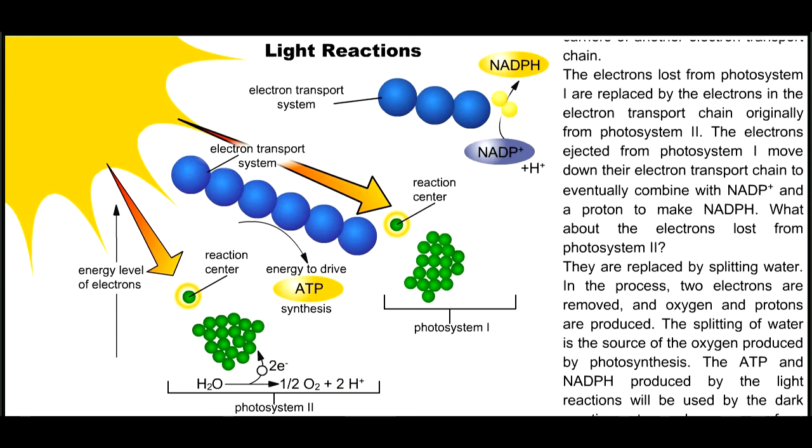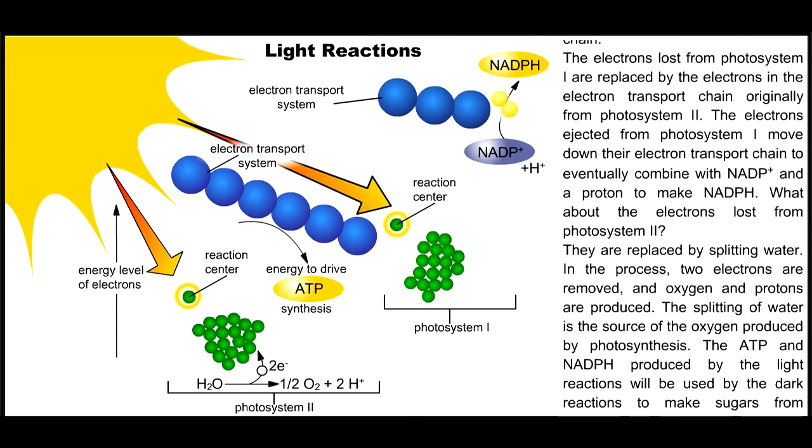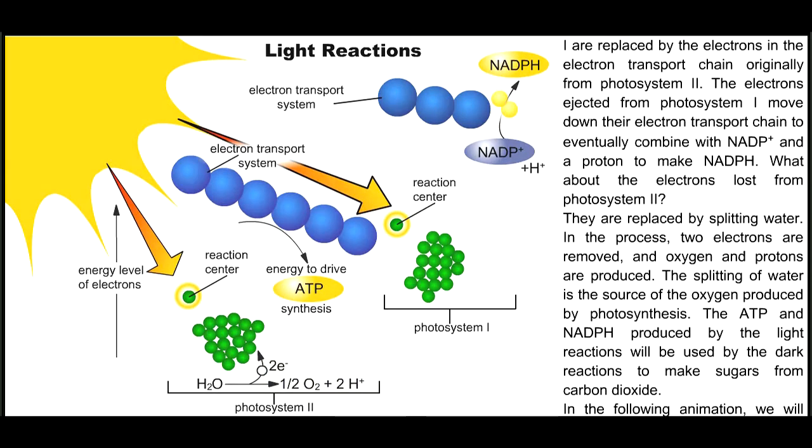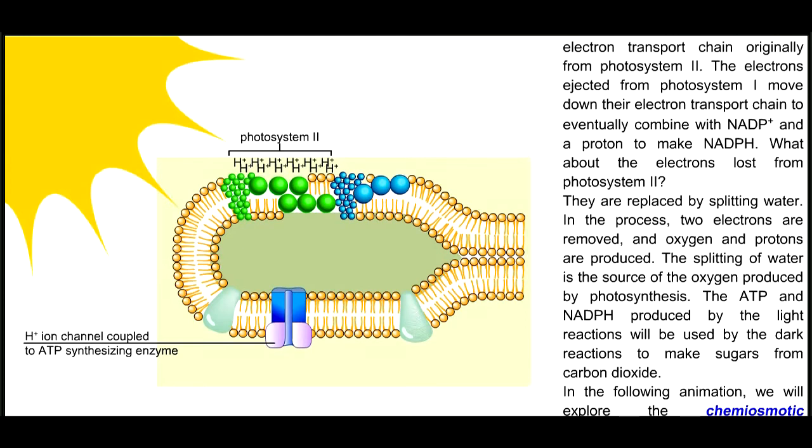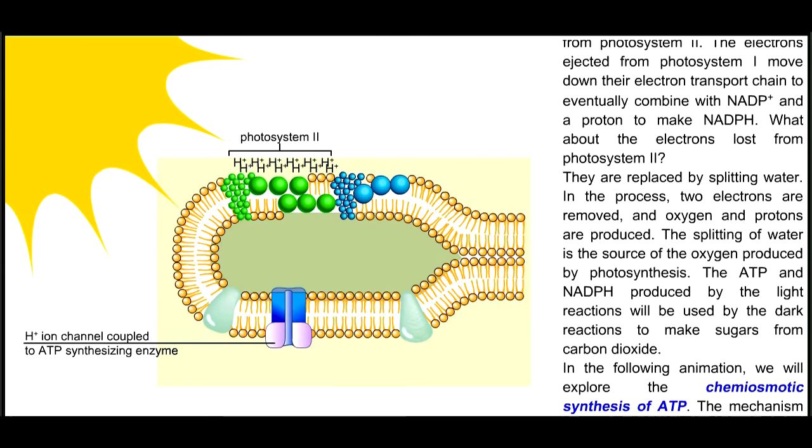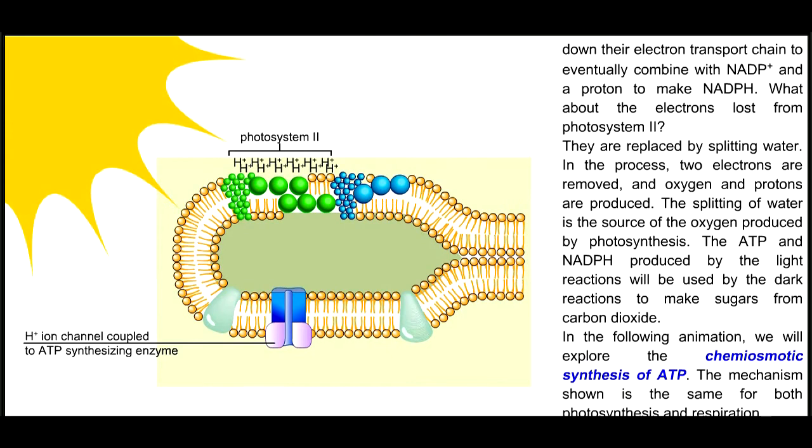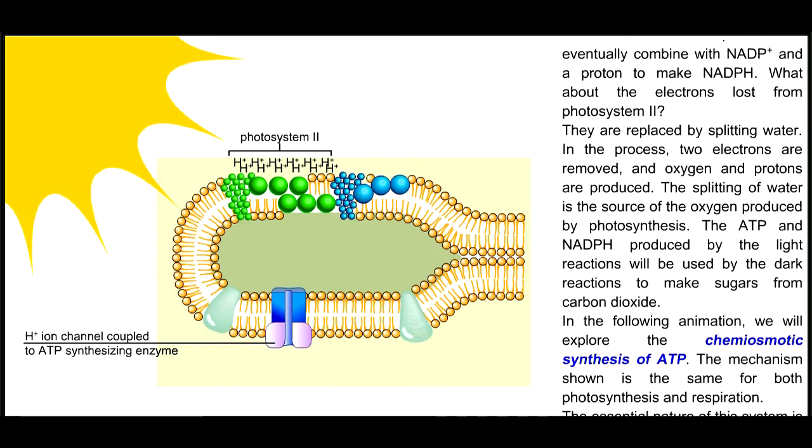The ATP and NADPH produced by the light reactions will be used by the dark reactions to make sugars from carbon dioxide. In the following animation, we will explore the chemiosmotic synthesis of ATP. The mechanism shown is the same for both photosynthesis and respiration.